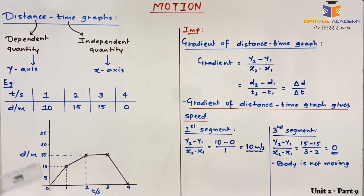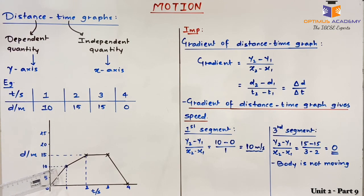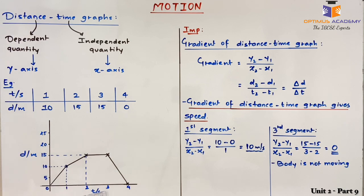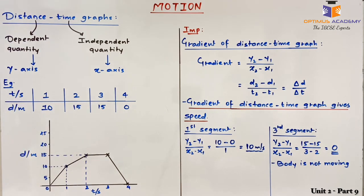We will represent these values on the graph. Time is on the x-axis and distance on the y-axis, and we must also mention their units — seconds for time and meters for distance. In 1 second the body covers 10 meters, so the point is plotted there. In 2 seconds the body covers 5 meters extra, so the point is plotted at 15. At 3 seconds the body is still at 15 meters, meaning no distance was covered between 2 and 3 seconds. At the 4th second the body has returned to its original position. Joining all these points gives us the graph.